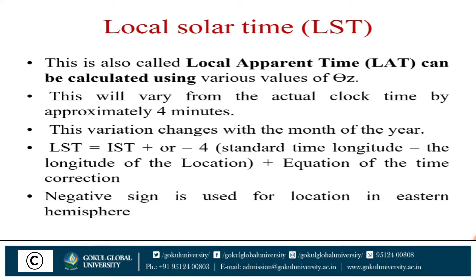Most important definition: LST — Local Solar Time, also called Local Apparent Time (LAT). It can be calculated using various values. It will vary from the actual clock time by approximately 4 minutes, and this variation changes with the month of the year. Local Solar Time = IST ± 4 × (standard time longitude − longitude of the location) + equation of time correction. The negative sign is used when the location is in the eastern hemisphere.